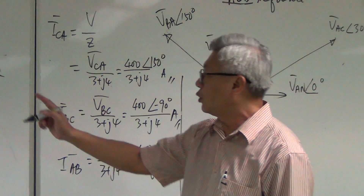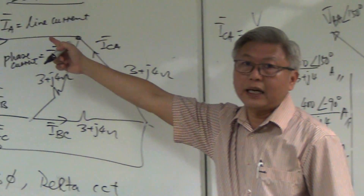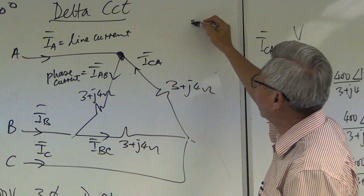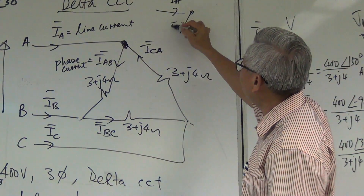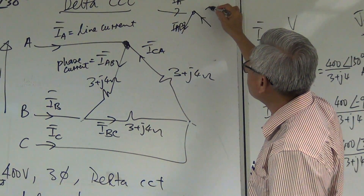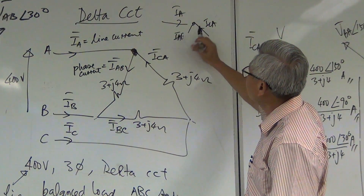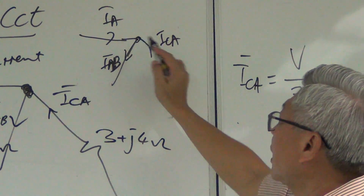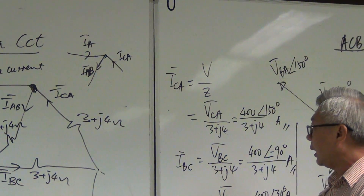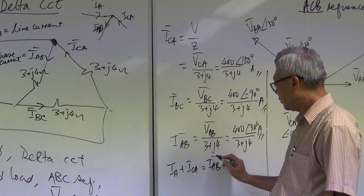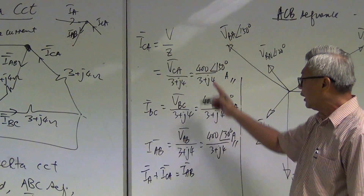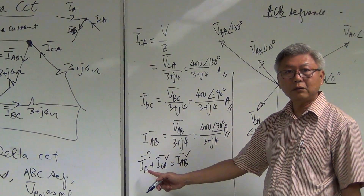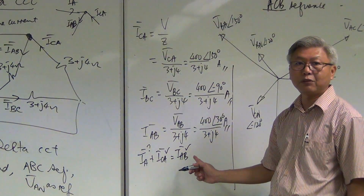Now the challenge: you've found the phase currents — if asked for line current Ia, look at the junction. You have current Ia, current Iab, and current Ica. By Kirchhoff's current law: Ica plus Ia equals Iab. So Ia equals Iab minus Ica. Since Ica and Iab are already calculated, Ia can be found. All values need to be in rectangular form.